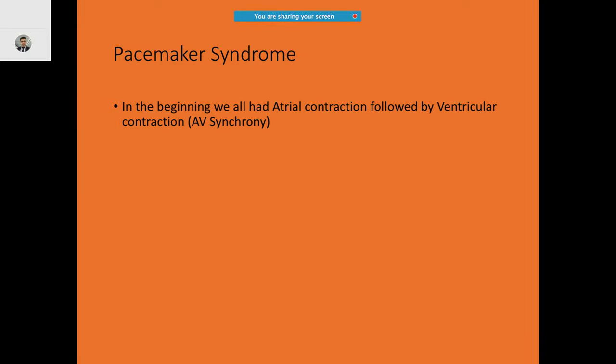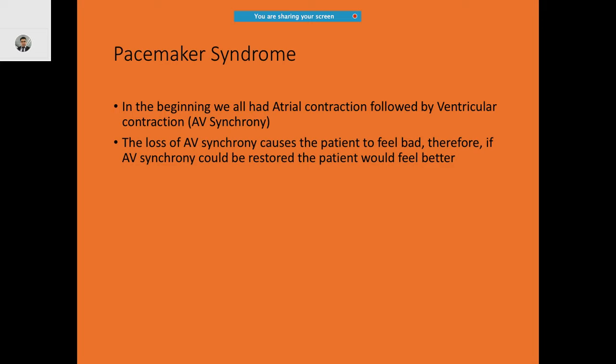Dual chamber pacing is pacing in both the atrium and the ventricle, with pacing and sensing in both chambers. Pacemaker syndrome occurs because there is normally AV synchrony — atrial contraction happens first, then ventricular contraction. If AV synchrony is lost, the patient will start feeling bad.